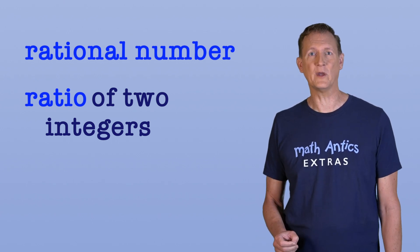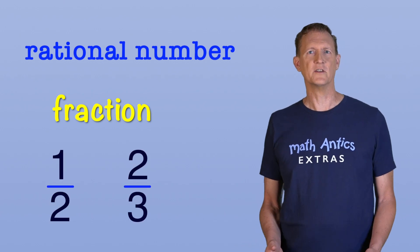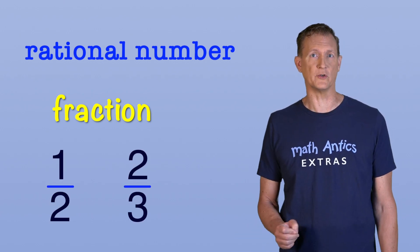Yup. A ratio of two integers is a fraction, like one-half or two-thirds. So any number that can be written as a fraction is a rational number.